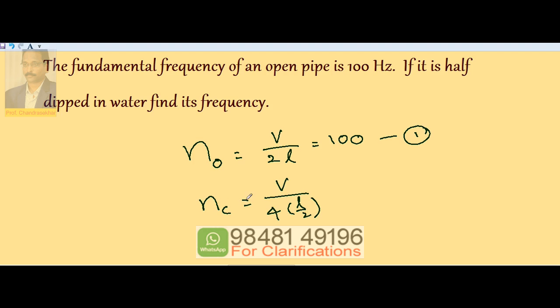So the fundamental frequency of closed pipe is V by 4L. Here L is nothing but L by 2.